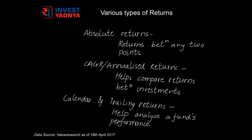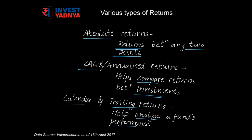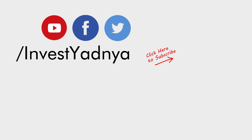So friends, in this video we spoke about absolute returns — which are nothing but returns generated by an investment between any two given points in time — CAGR, which can help us compare returns between two investments, and calendar and trailing returns, which can help us analyze the performance of a fund. Hope you know the meaning of these terms the next time you come across them. Thanks for watching. Watch this space for more such topics. Until then, happy investing! If you have any questions, let us know in the comment section below our videos. And if you like our videos, please do subscribe. Thank you!